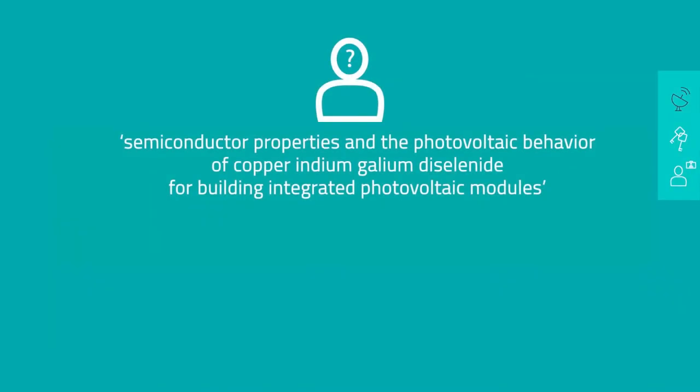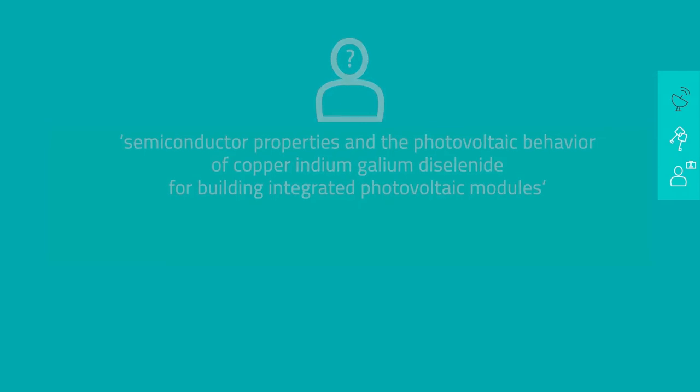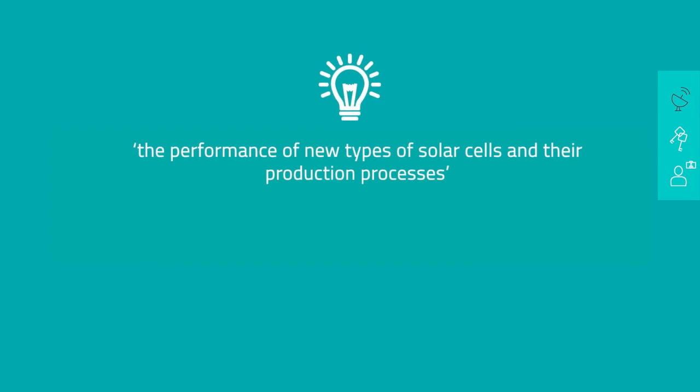Let's give an example. I could say: I researched the semiconductor properties and the photovoltaic behavior of copper indium gallium diselenide for building-integrated photovoltaic modules. Not a lot of people will understand this, so they can't think along with you and they can't help you identify opportunities. A better way to put this would be: I researched the performance of new types of solar cells and the production process. This is something people can really understand and they can imagine how this would benefit society.